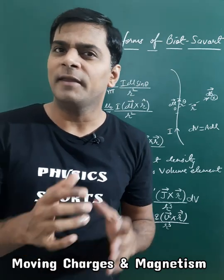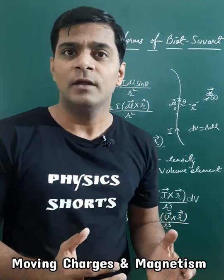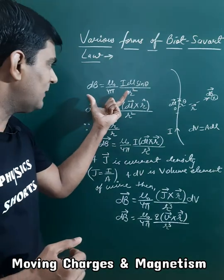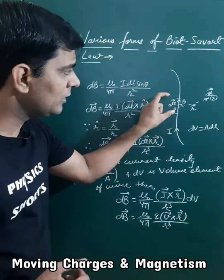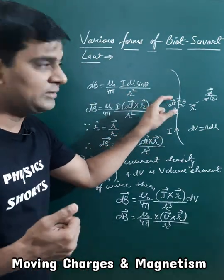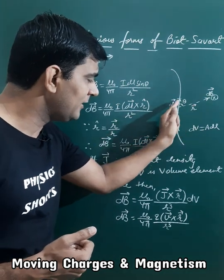The expression of Biot-Savart law can be written in various forms. First of all, I am writing the magnitude of this magnetic field due to a current element idl where theta is the angle between vector r and the dl element.